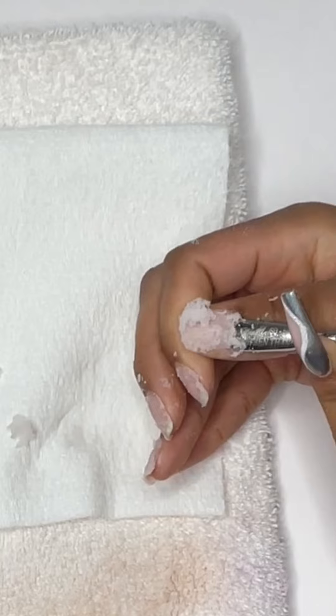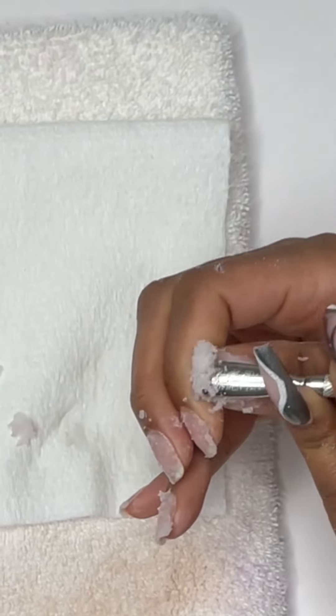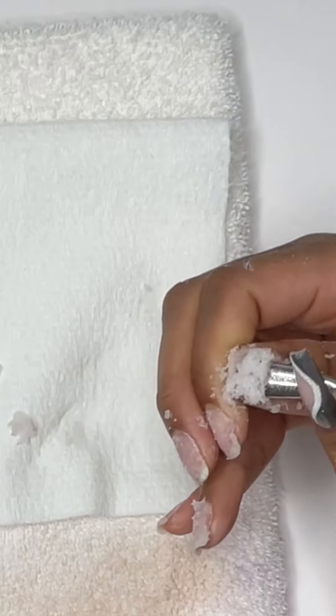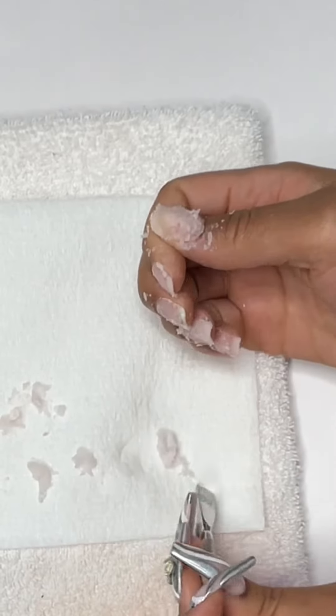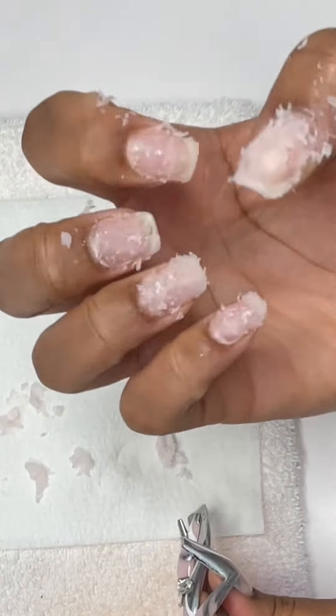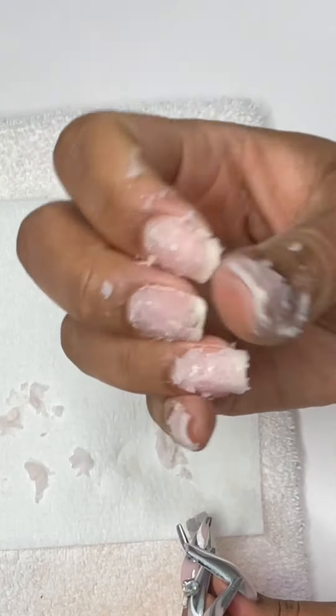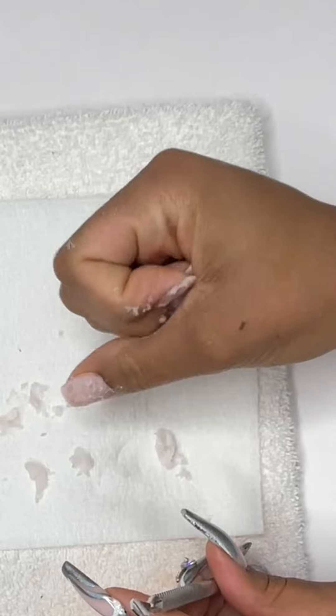As you can see on my thumb, I did not have that thumb completely in, so just a little bit on the corner the product is a little bit more hard to get off. This is what they look like after you have taken that cuticle pusher. You can just basically roll the product off.